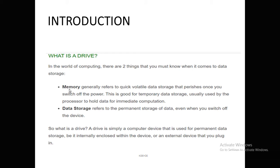We have two types of memory: primary memory and secondary memory. Primary memory is where data is typed and processed. But if the data is in primary memory and the computer is switched off — the power goes off — the data is lost. So primary memory is temporary memory. When power is off, the data is automatically erased.